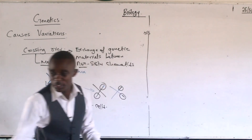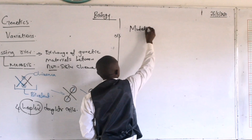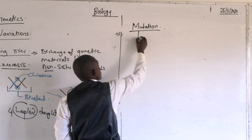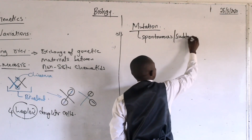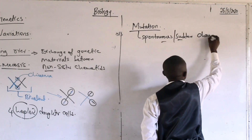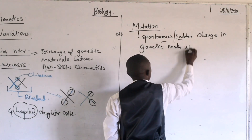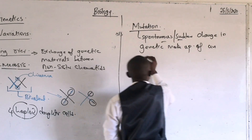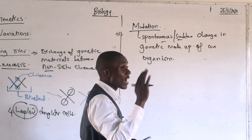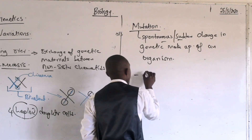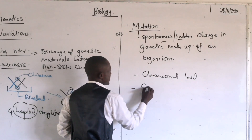The last factor causing variation is mutation. Mutation simply means a spontaneous change in the genetic makeup of an organism. Mutation occurs at two levels: it can occur at the chromosomal level, or it can occur at the genetic level.